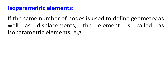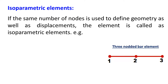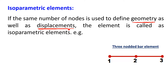In isoparametric element, the same number of nodes is used to define the geometry of the element as well as the displacement field of the element. If you consider the example of a three-noded bar element, geometry means the Cartesian coordinates of any point of the bar element. And second, if you want to define the displacement field of the bar element, that is u. So if you want to define geometry or displacement field, you use the same number of nodes.